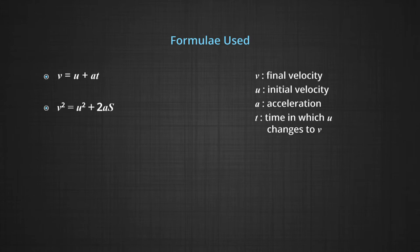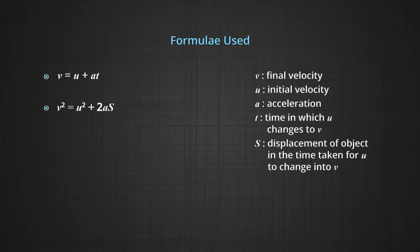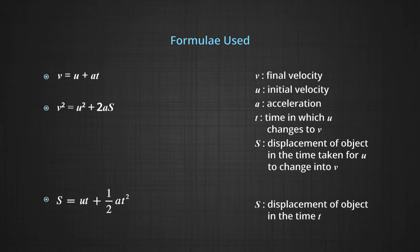Another formula is V² = U² + 2AS, where V stands for the final velocity, U stands for the initial velocity, A is the acceleration and S is the displacement. Third formula is S = UT + ½AT², where S stands for the displacement, U is the initial velocity, T is the time, and A is the acceleration.